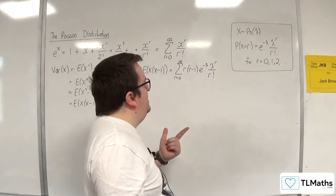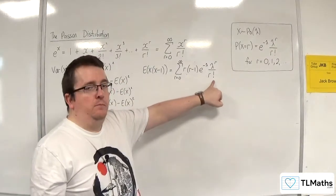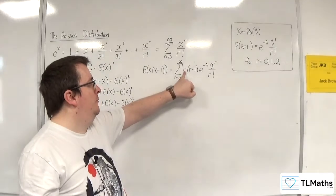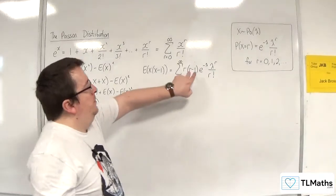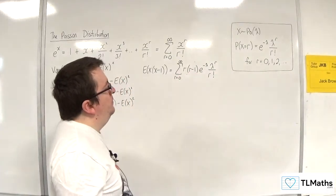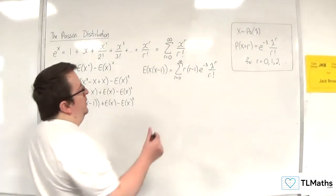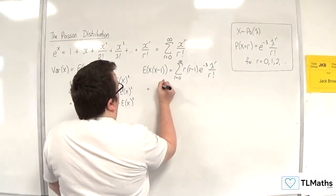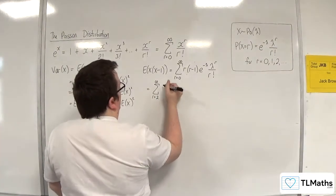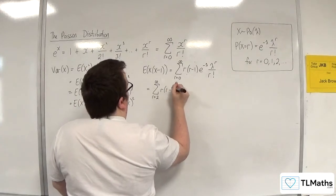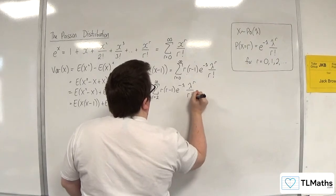The first thing to note is that when R is 0, the first term is just going to be 0 because you've got R at the front. And when R is equal to 1, this bracket will become 0. So actually the first two terms in this summation are 0. I could rewrite this as the summation from R equals 2 to infinity of R times R minus 1, times E to the minus lambda, times lambda to the R over R factorial.